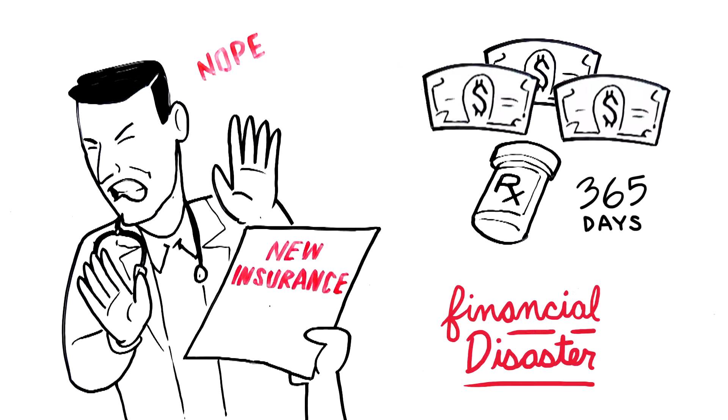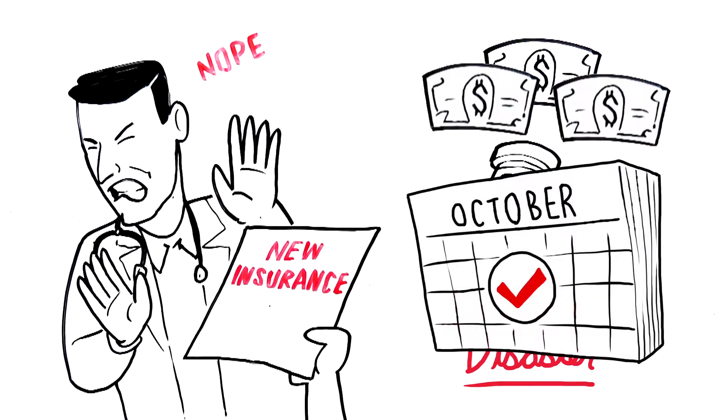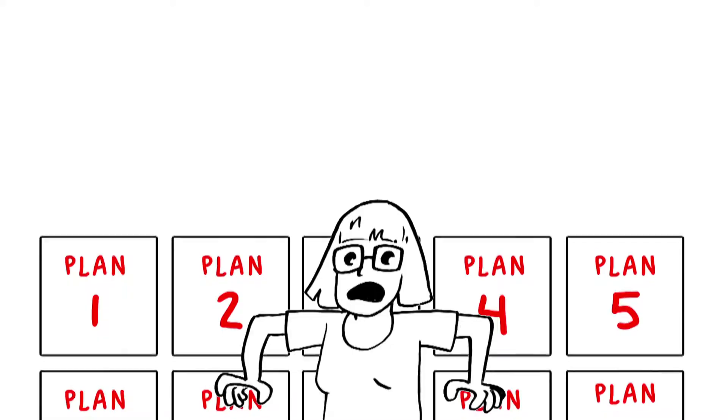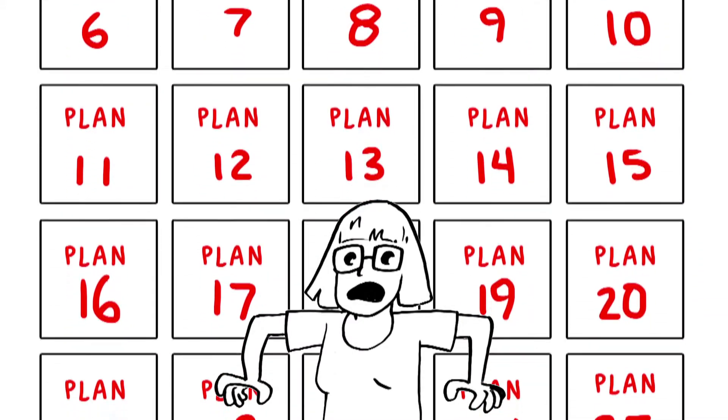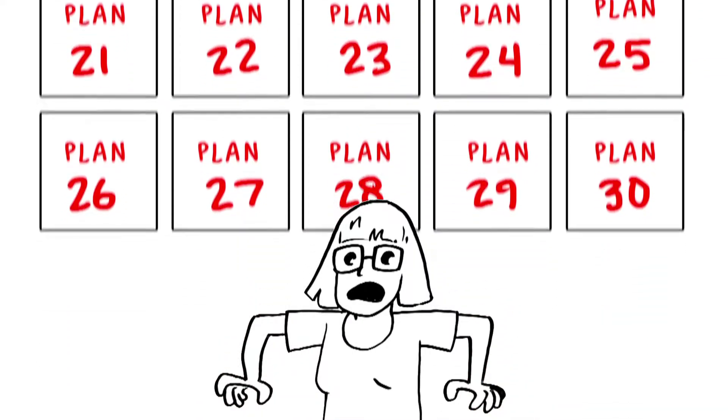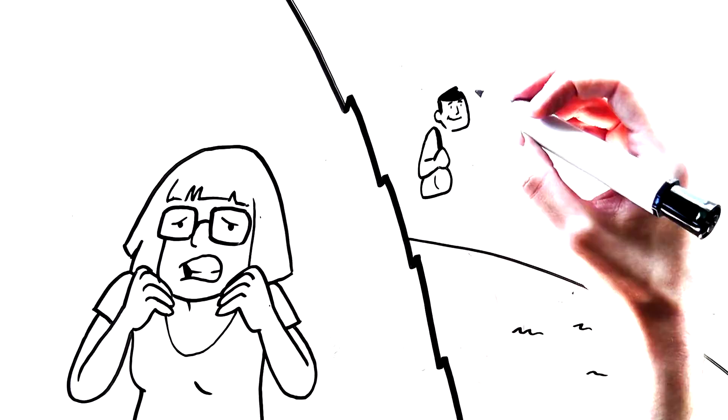And as you know, if you're already 65, this madness happens every year. It's next to impossible to compare all the different plans out there. There are dozens. Sally could be worrying about her decision for weeks.